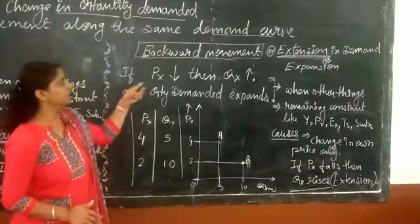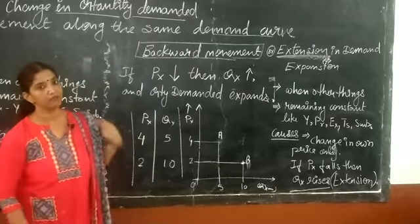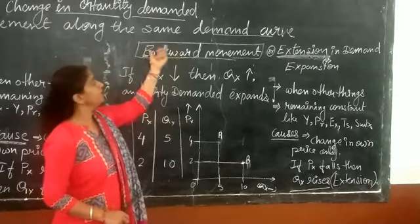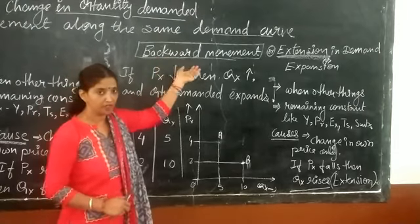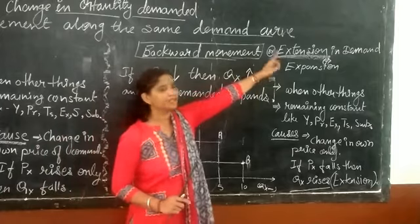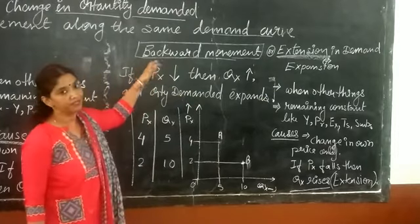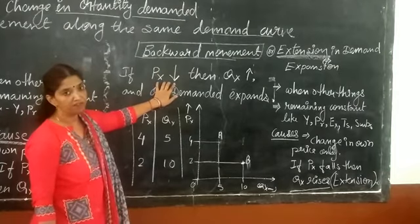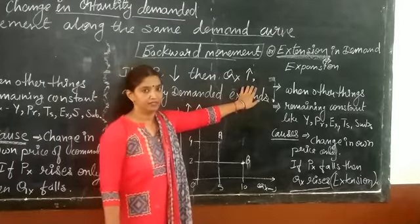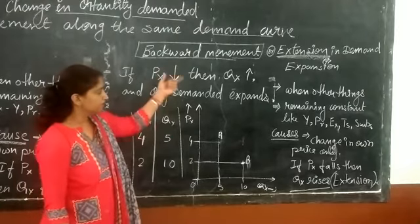Next is backward movement along the same demand curve. Earlier we discussed upward movement, which shows contraction in demand. Just the opposite applies here — if there is backward or downward movement along the same demand curve, it means there will be extension or expansion in demand. If there is a fall in the own price of a commodity, then the quantity demanded for that commodity rises; this is called expansion or extension in demand.